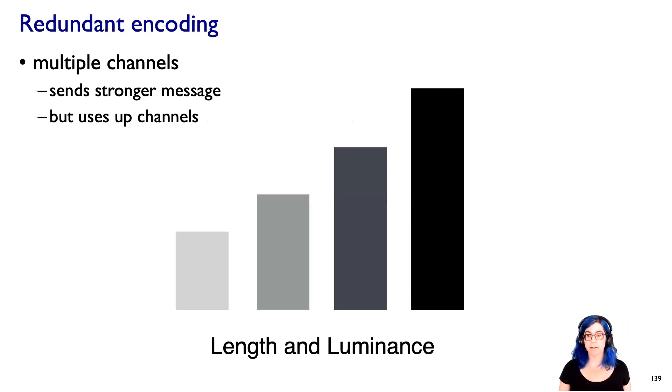We could use more than one channel at once for the same attribute. You could redundantly visually encode with multiple channels. It sends a stronger message to your perceptual system. Of course, it also uses up channels. You get a stronger message, but then you couldn't use this channel for another attribute. Here's an example where, in this bar chart, we've got a value that is being conveyed by vertical position or aligned vertical position - that is, length and luminance. It's showing you in two ways the same information.